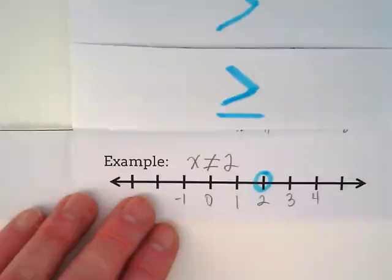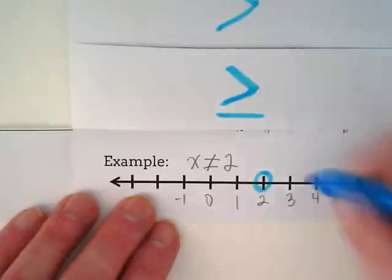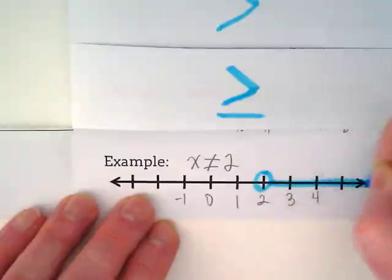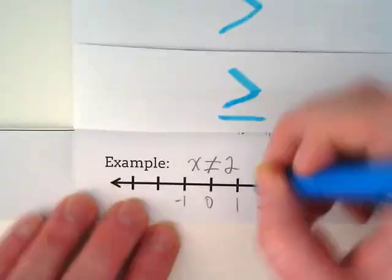Solid or empty. And what do you think we should do with the lines? Both. Why, Alex? Any other number on the number line would make this inequality work, except 2.